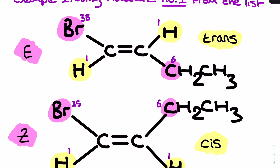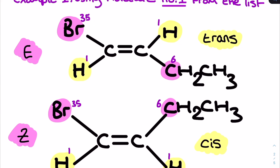You must make sure you do them one at a time, otherwise this won't work. First I check the criteria: each carbon in the double bond must be bonded to two different atoms or groups — I can see two different groups on each side. For the left-hand carbon, the immediate atoms are bromine and hydrogen. I label them with their atomic numbers — whichever atomic number is greater deems that atom the high priority group. So the high priority group on the left-hand carbon is bromine.